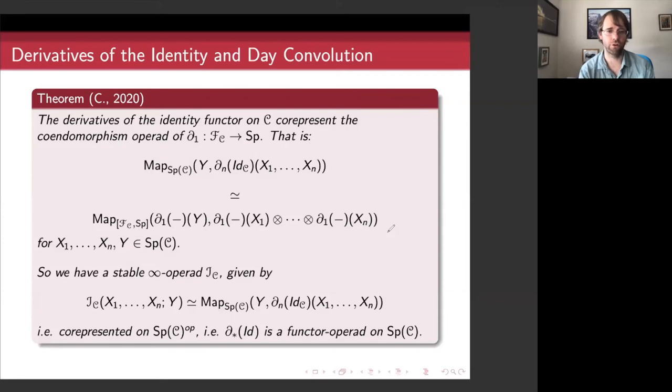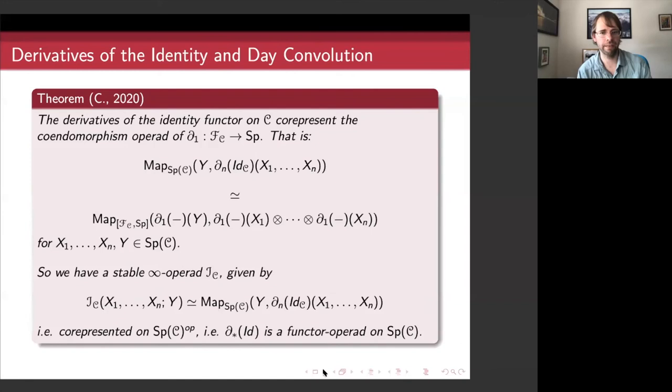As a side note and slight extension of this result: there is a similar statement for an arbitrary functor F from C to D, where C and D are pointed compactly generated infinity categories and F is reduced. You can get the derivatives of F in a similar way — and the formula gives you a bimodule. If you work out what a bimodule over these stable infinity operads should be, the derivatives of an arbitrary functor can be viewed as a bimodule over the derivatives of the identity on the source and target categories.